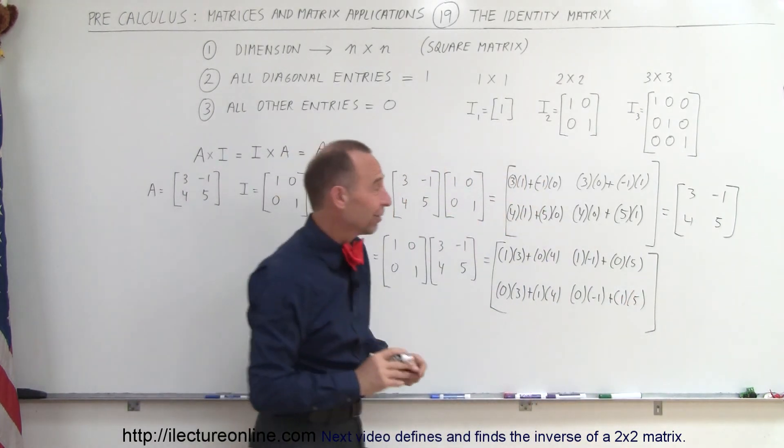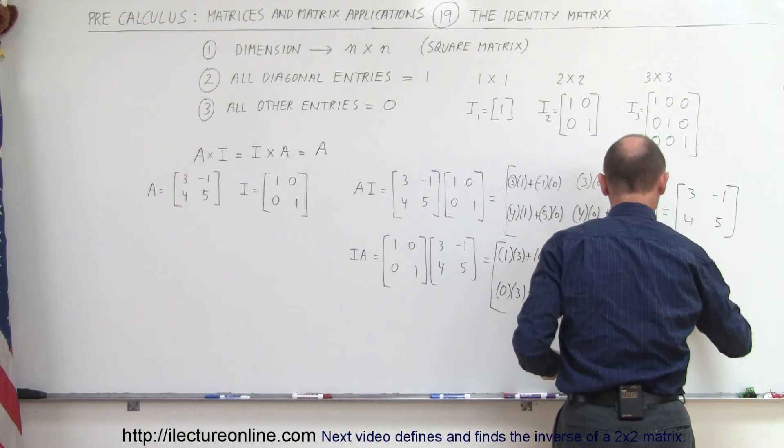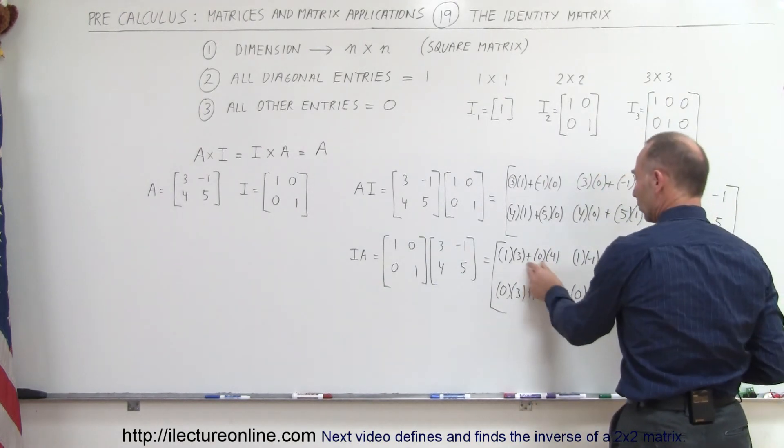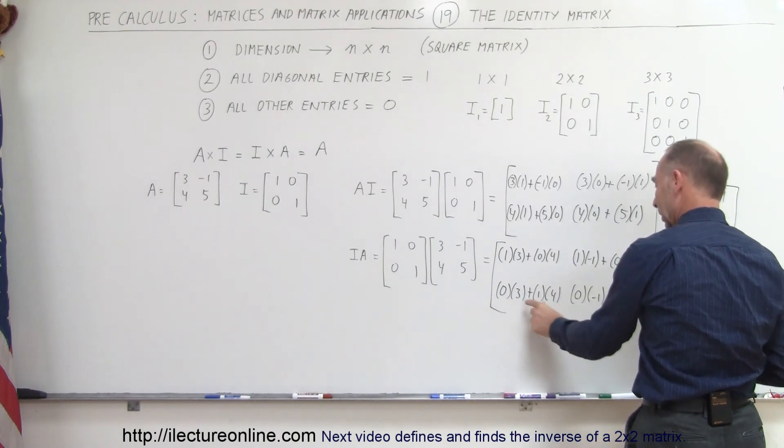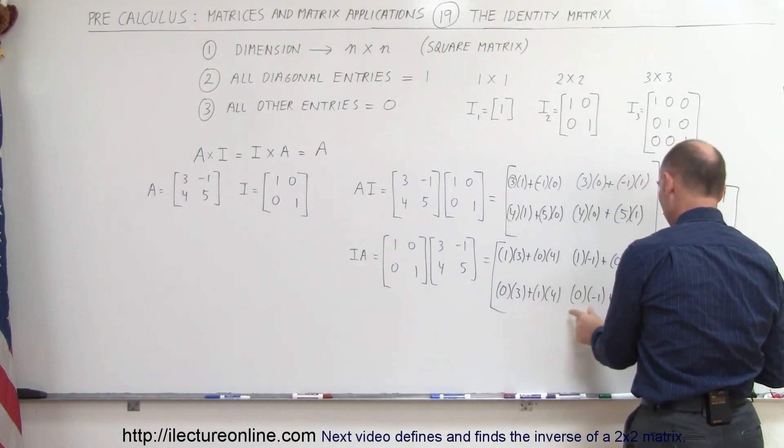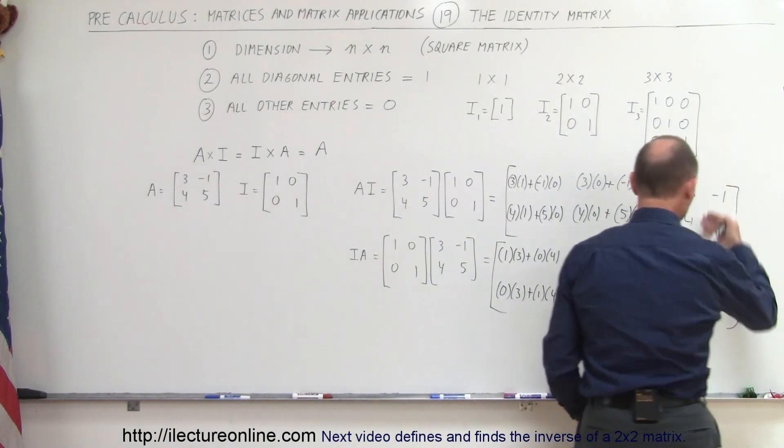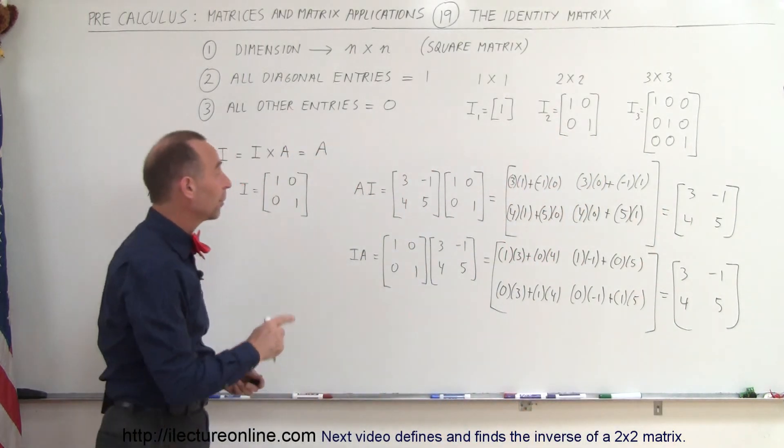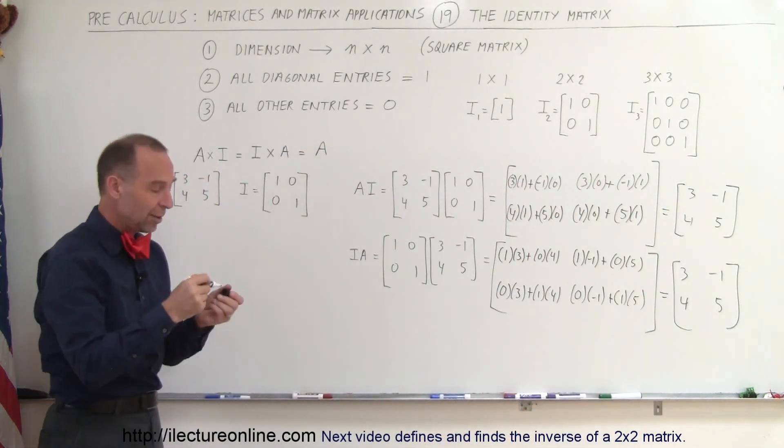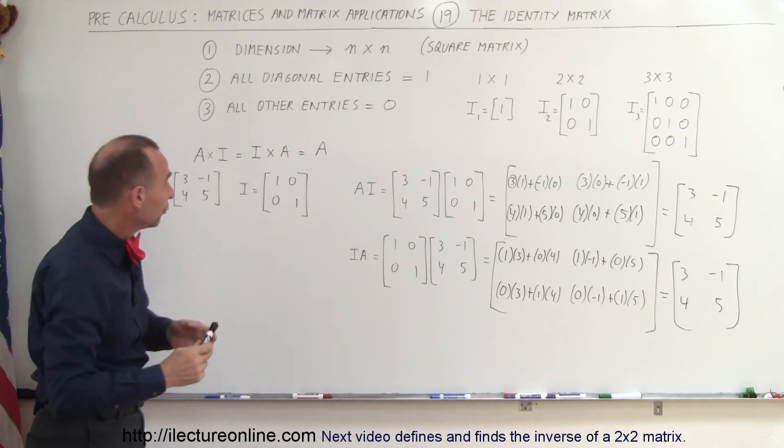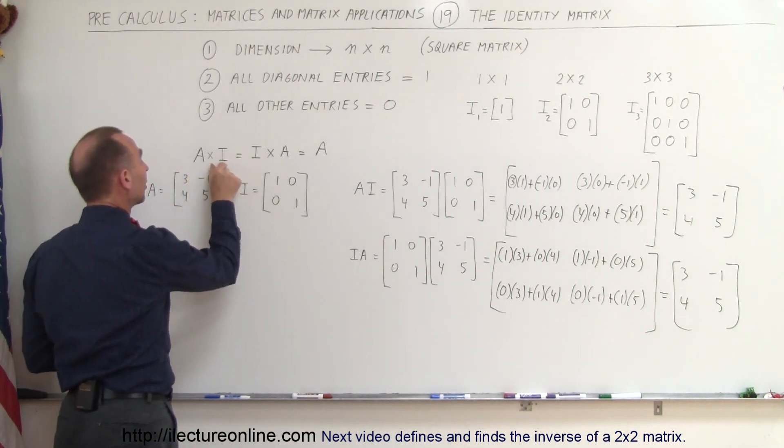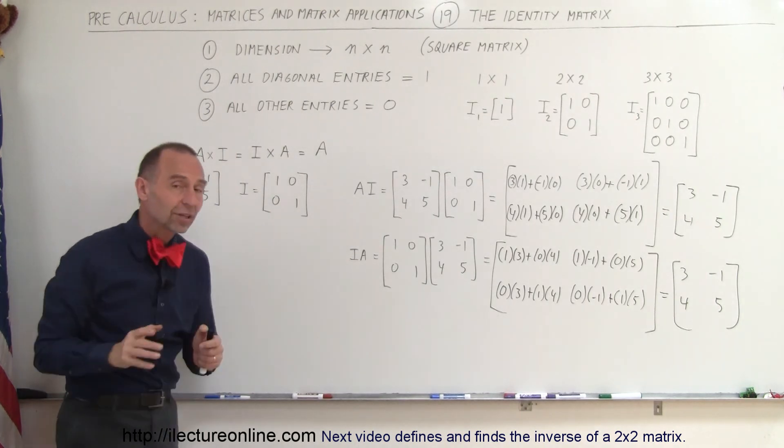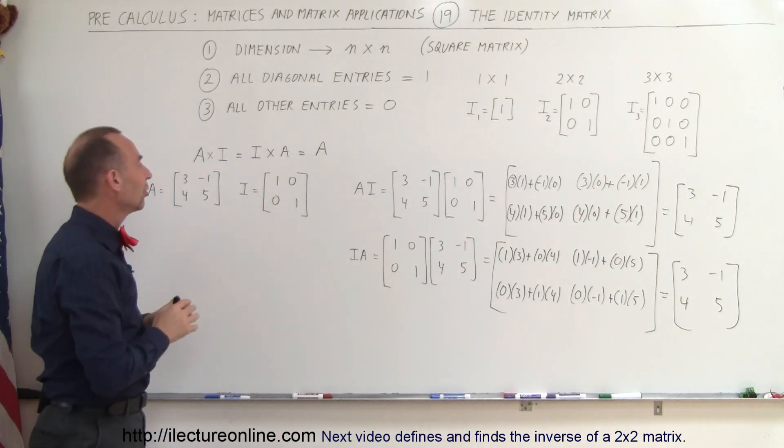And, again, when it's simplified, we get the following results. This goes to 0, so we get a 3 up there. That's 0, so we get a minus 1. This is 0, so we get a 4. And this is 0, so we get a 5. And you can see, we get the exact same result. It doesn't matter if we multiply A times I or I times A, we get the same result, which proves that when we multiply any matrix times the identity matrix, regardless of which order we put the identity matrix in, we get the same initial matrix back.